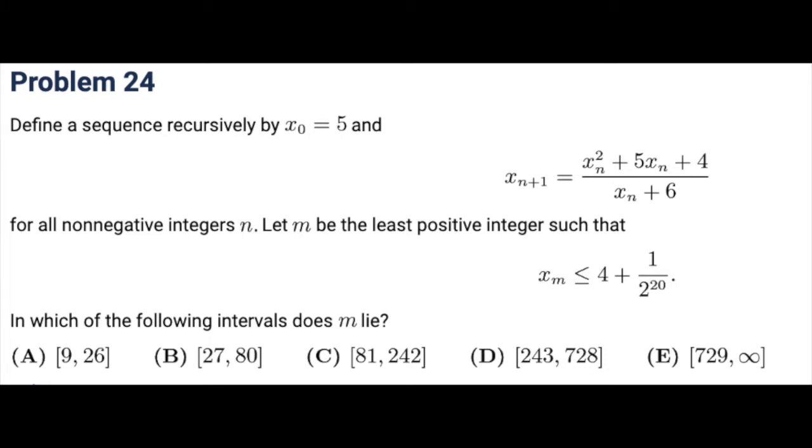The problem statement is: define a sequence recursively by x_0 = 5 and x_{n+1} = (x_n^2 + 5x_n + 4)/(x_n + 6) for all non-negative integers n. Let m be the least positive integer such that x_m ≤ 4 + 1/2^20. In which of the following intervals does m lie?